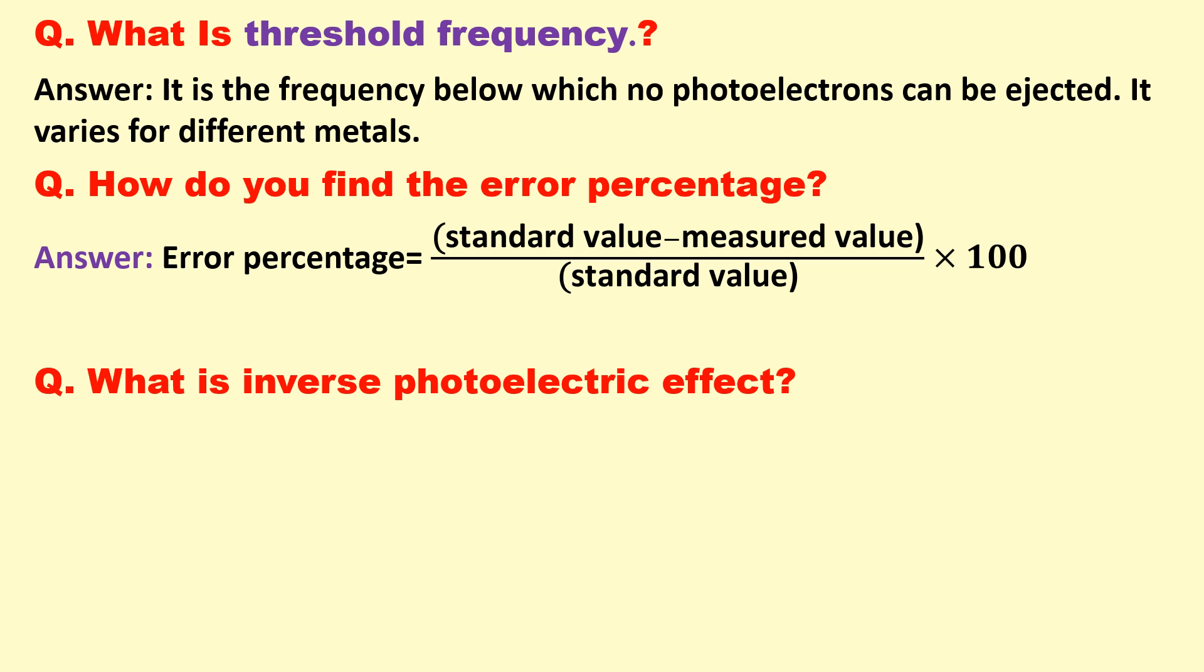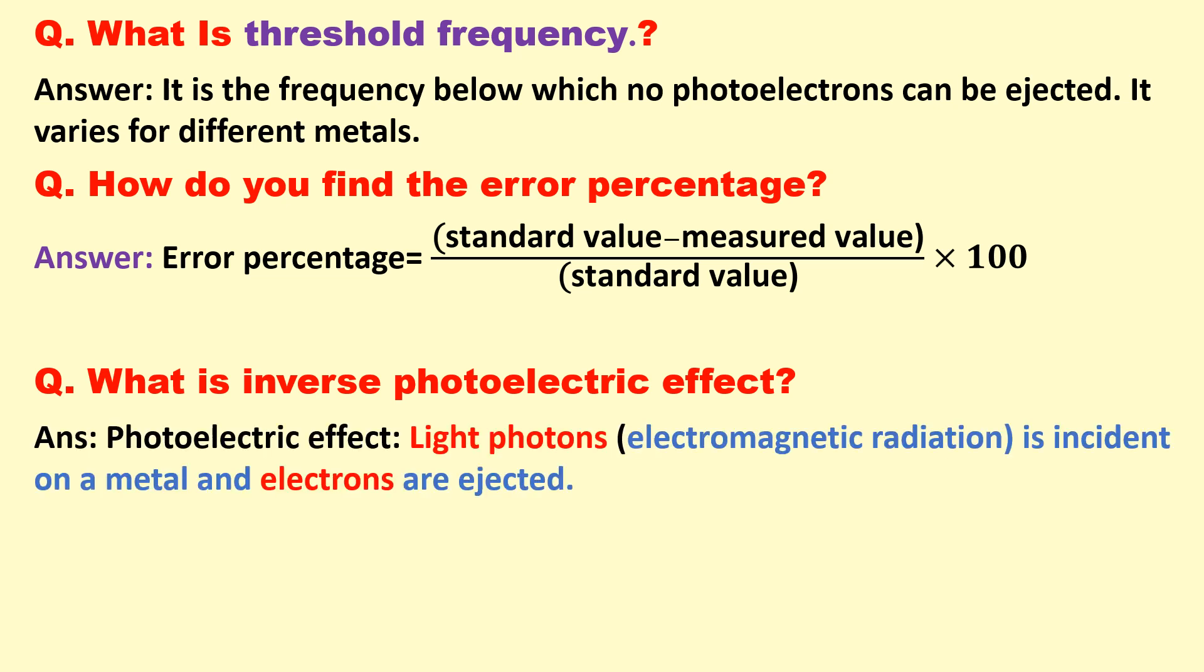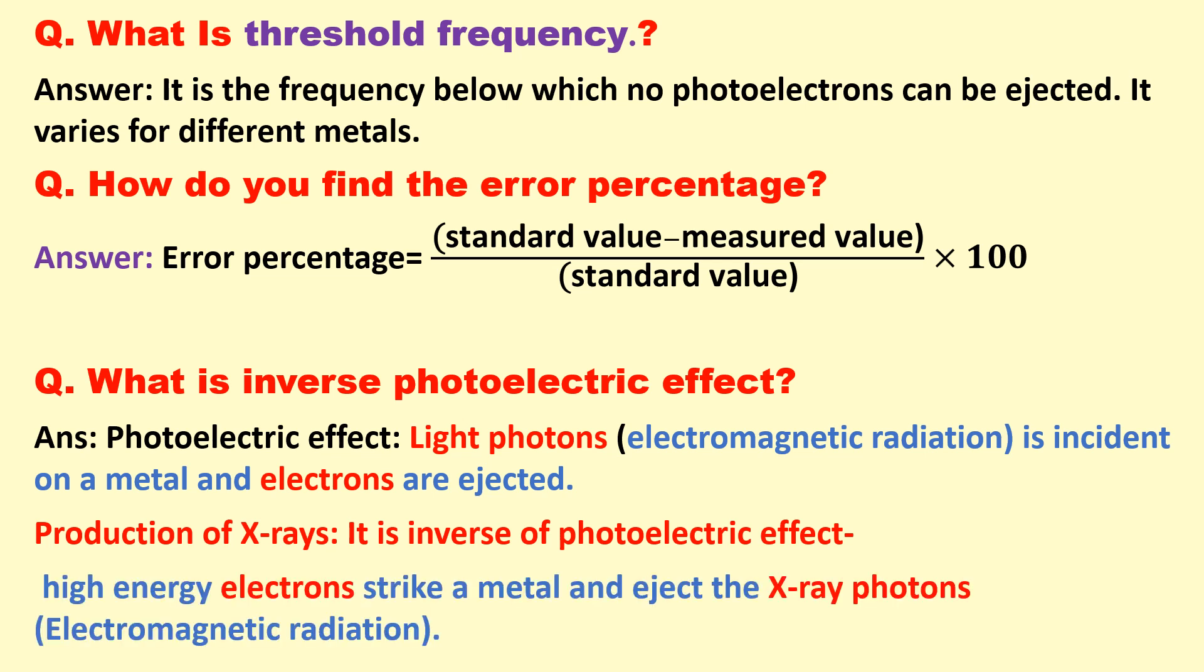What is the inverse photoelectric effect? In photoelectric effect, we shine the metal with light photons and electrons are ejected. Whereas in case of the production of X-rays, we use the high energy electrons and we eject the X-ray photons. So production of X-ray is the inverse of the photoelectric effect.